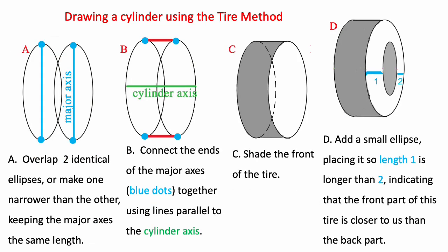To draw a cylinder using the tire method overlap two identical ellipses or make one narrower than the other keeping the major axes the same length. Then connect the ends of the major axes together using lines that are parallel to the cylinder axis. Shade the front of the tire and then finally add this small ellipse on the side so that this length is longer than this length indicating that the front part of this tire is closer to us than the back part.